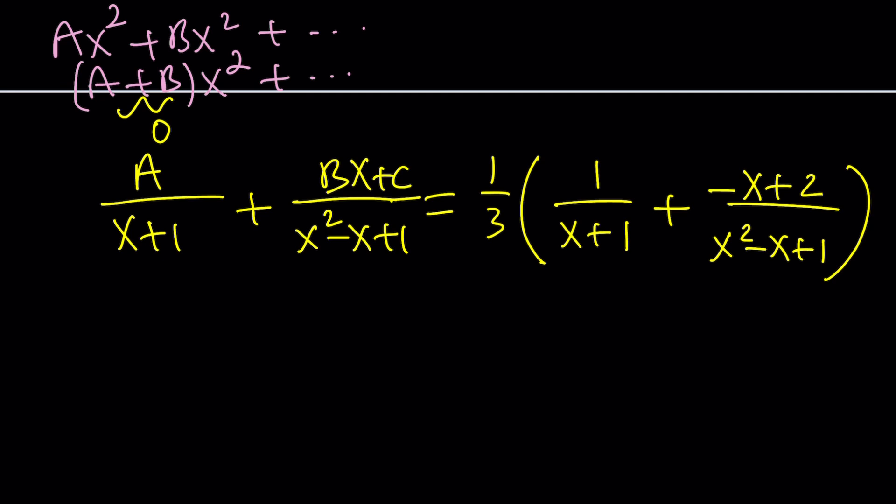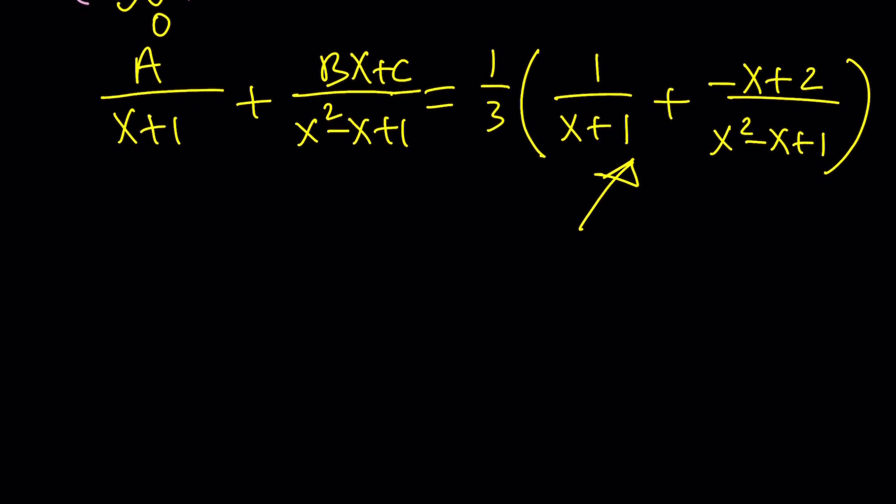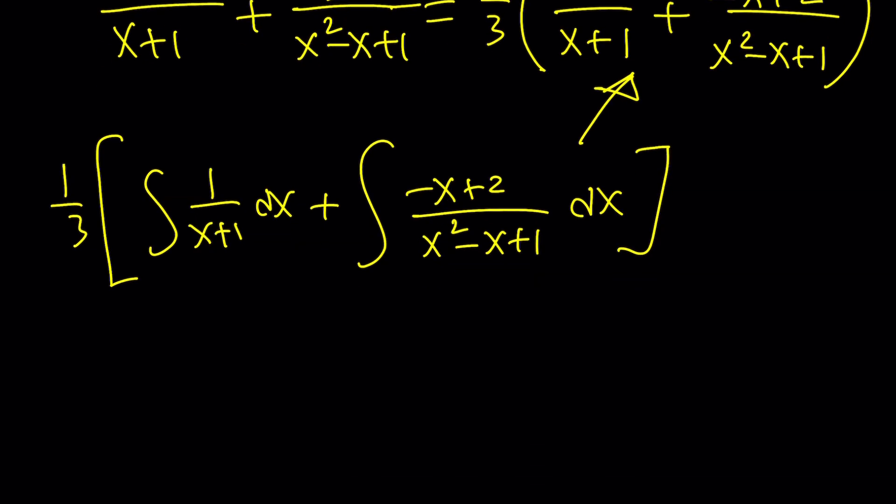So what I need to do now is integrate this and that should give me the answer. But when I integrate, like how do you integrate this, right? We need to kind of think about it. I need to integrate 1/3 times 1 over x plus 1 dx and then plus negative x plus 2 divided by x squared minus x plus 1 dx. Here's a couple things you can do. First of all, I can kind of split it up into two expressions. One thing that you need to do here is, if you think about the denominator, it's a derivative. Let's call that u.